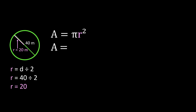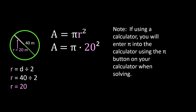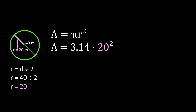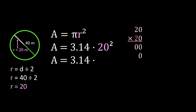We go back to our formula: area equals pi — using 3.14 — times our radius of 20 squared. If you're using a calculator, enter pi using the pi button. For the rest of us, we start with 20 squared, which is 20 times 20. Multiplying by 0 gives 0, then 2 times 0 is 0 and 2 times 2 is 4, and adding gives us 0, 0, 4 — so 20 squared is 400.